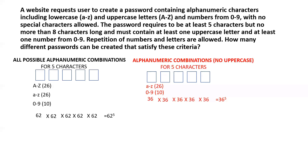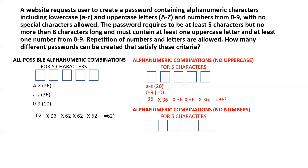Similarly, we calculate the number of alphanumeric combinations without any digits from 0 to 9 for those five characters. This time we only allow uppercase a to z (26 characters) and lowercase a to z (26 characters), giving 52 different ways to fill the first placeholder. Taken all together across all five positions, we have 52 to the power of 5 different combinations of characters where there are no digits.